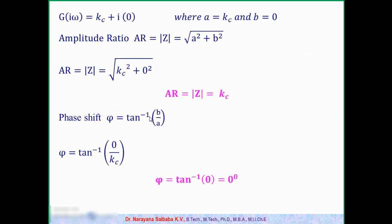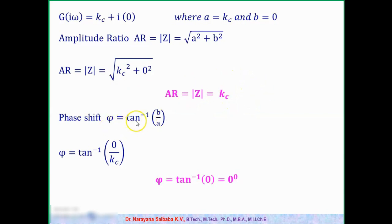Now with a = Kc and b = 0, the amplitude ratio AR = √(Kc² + 0²) = Kc. So the amplitude ratio for a proportional controller is simply Kc — it is independent of omega. Similarly, phi = tan⁻¹(b/a) = tan⁻¹(0/Kc) = tan⁻¹(0) = 0 degrees. So the phase angle phi is always 0 degrees.